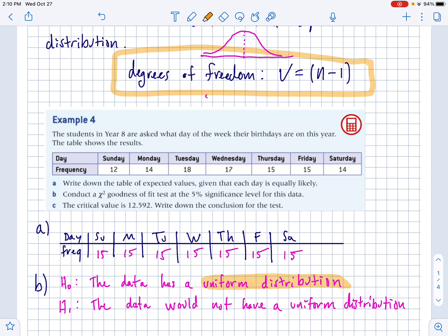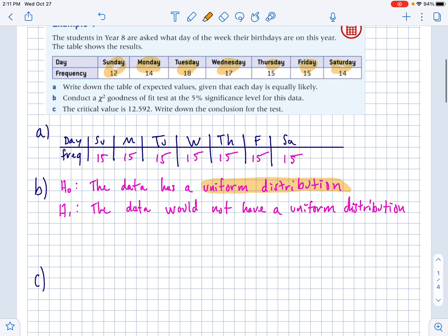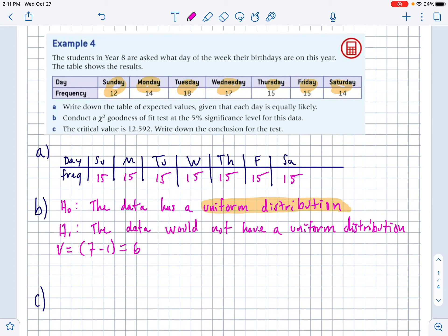So back up here, the degrees of freedom for a chi-squared goodness of fit test are not quite the same as the chi-squared independence test. All you do is take the V, degrees of freedom is V, and it's N minus 1. So it's the categories you have minus 1. So here we have 1, 2, 3, 4, 5, 6, 7. So degrees of freedom is going to be 7 minus 1, which is 6.